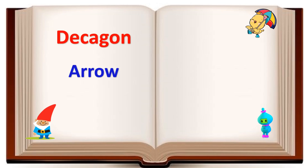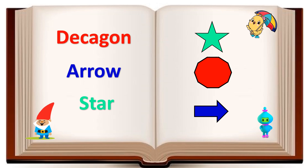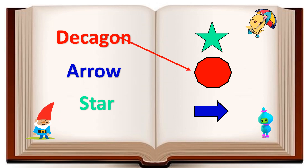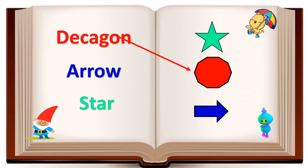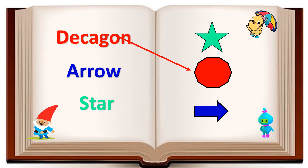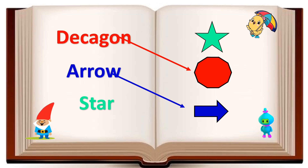Let's match the spelling of decagon with its correct picture. Good job! Now we will match the spelling of arrow with its correct picture. Well done.